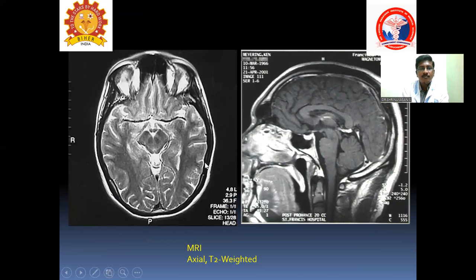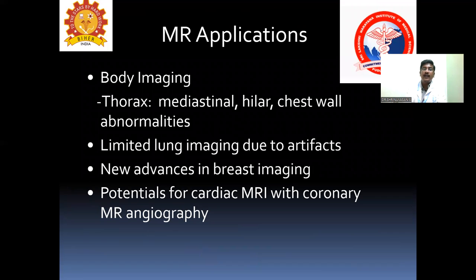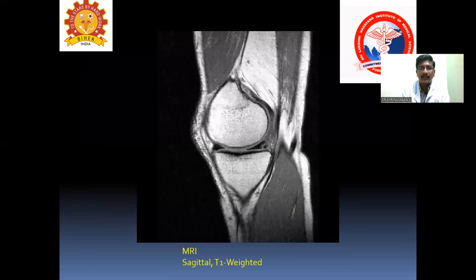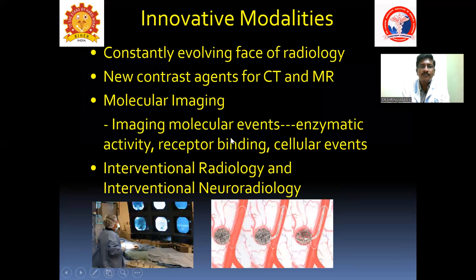MRI produces imaging appearances very similar to pathological slides, with superior contrast resolution. You can clearly see sulcal spaces, corpus callosum, and all brain structures with better tissue contrast in multiple planes. MRI has wide-ranging applications — almost all organs can be imaged. It is highly useful in MSK imaging, allowing visualization of cartilage, meniscus tears, and marrow, where any abnormal marrow signal intensity can be easily identified.